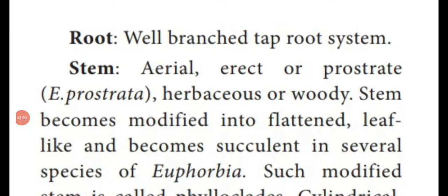Root: It is a dicot plant with a taproot system. Stem: aerial, above the ground level, erect and straight, or sometimes prostrate — that is partly horizontal and partly erect. Example: Euphorbia prostata. The stem may be herbaceous or bushy in appearance, or in some species strong with a woody stem.